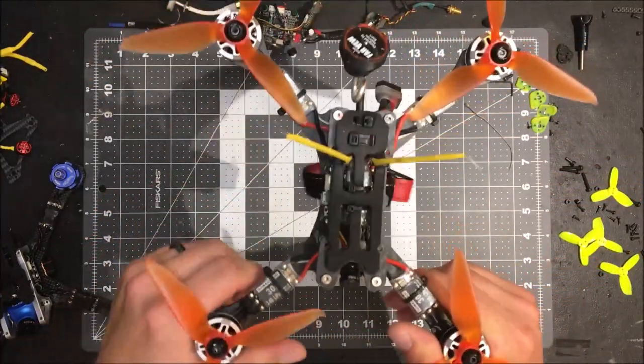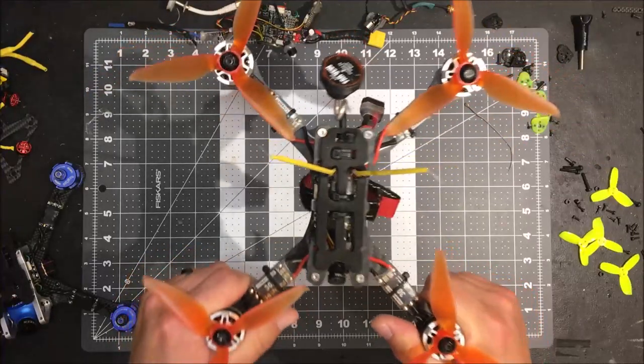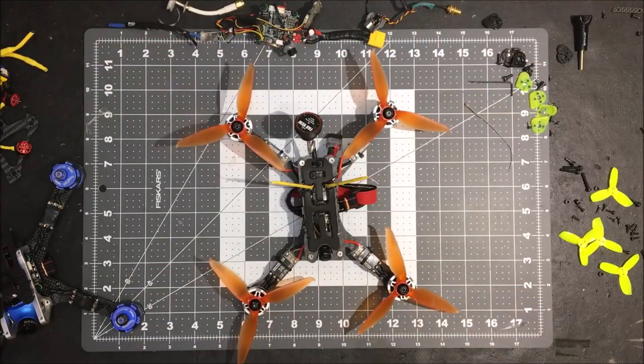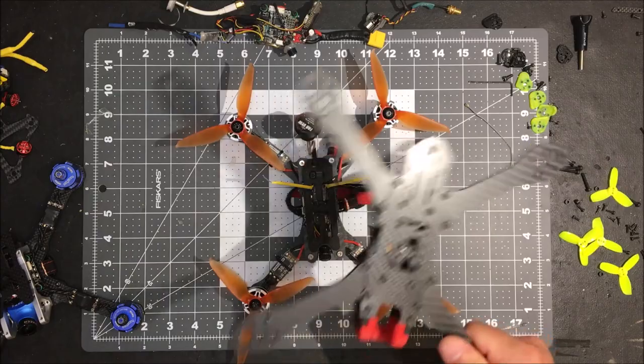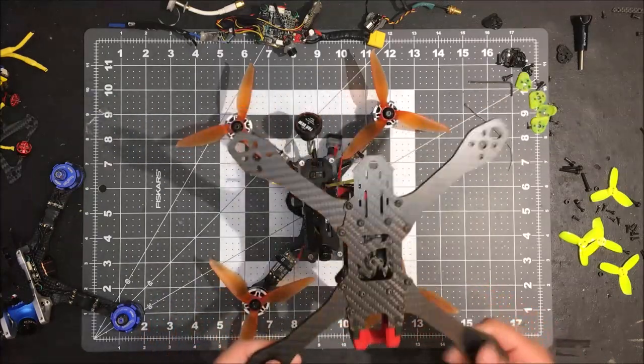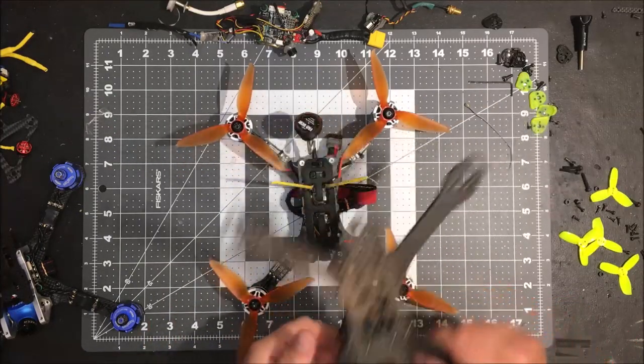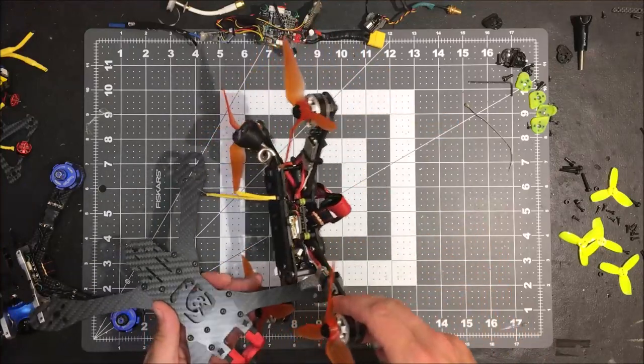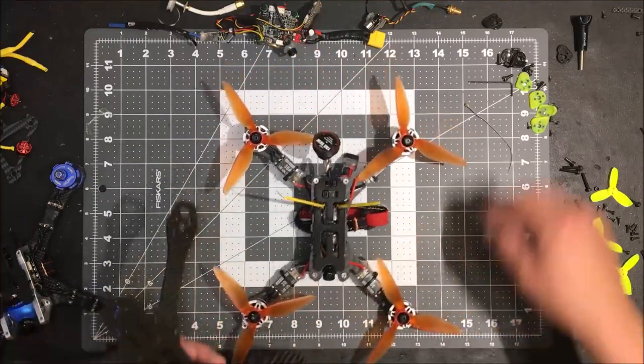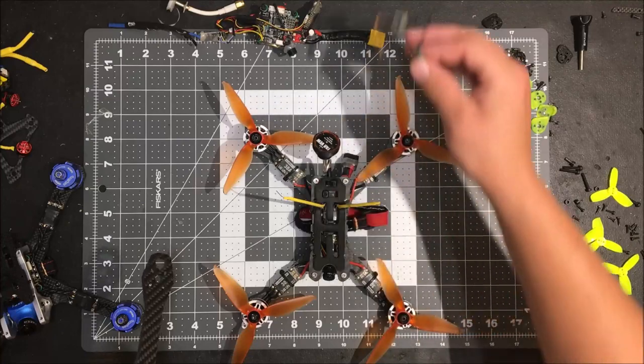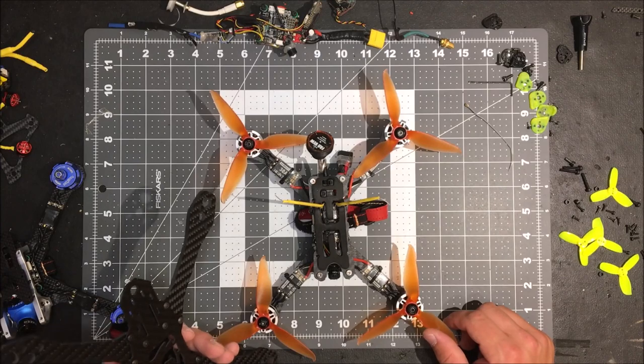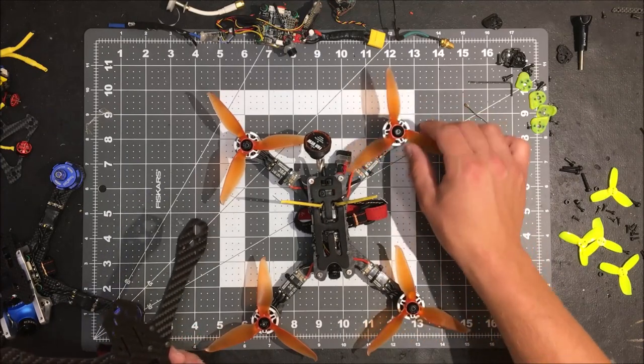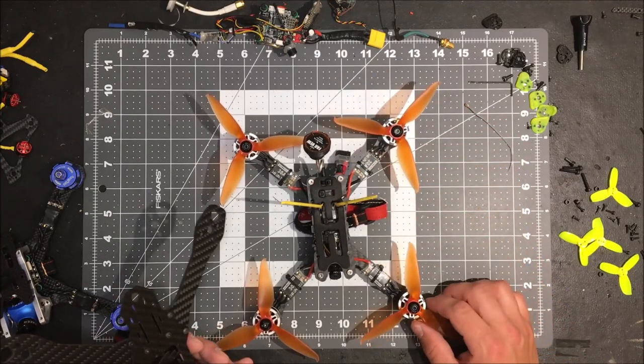So everything's gonna come off this bird and I do believe, finally, the Mocha Berserker is going to be built. I'm going to pull out the Foxeer, I'm going to pull out the CL Racing flight controller. I'll probably end up using a VTX03 that I've got laying around for the video transmitter. And then I'm not sure yet if I'm going to use the ESCs off of this or if I'm going to go with an all-in-one.